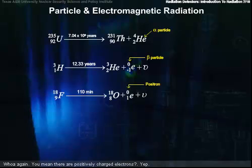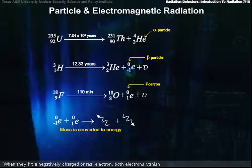Whoa, again! You mean they are positively charged electrons? Yep. They're called positrons and are anti-electrons. When they hit a negatively charged or real electron, both electrons vanish, and two photons with energy equal to the mass of the electron appear headed in opposite directions. And yes, this is an example of how mass can be converted directly into energy. Life in the nuclear world is stranger than you'd think.